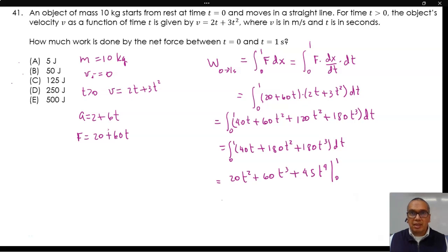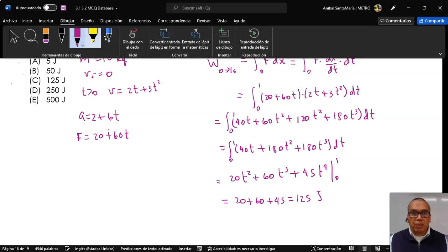And that is 20 plus 60 plus 45 which is equal to 125 joules. This corresponds to option C.